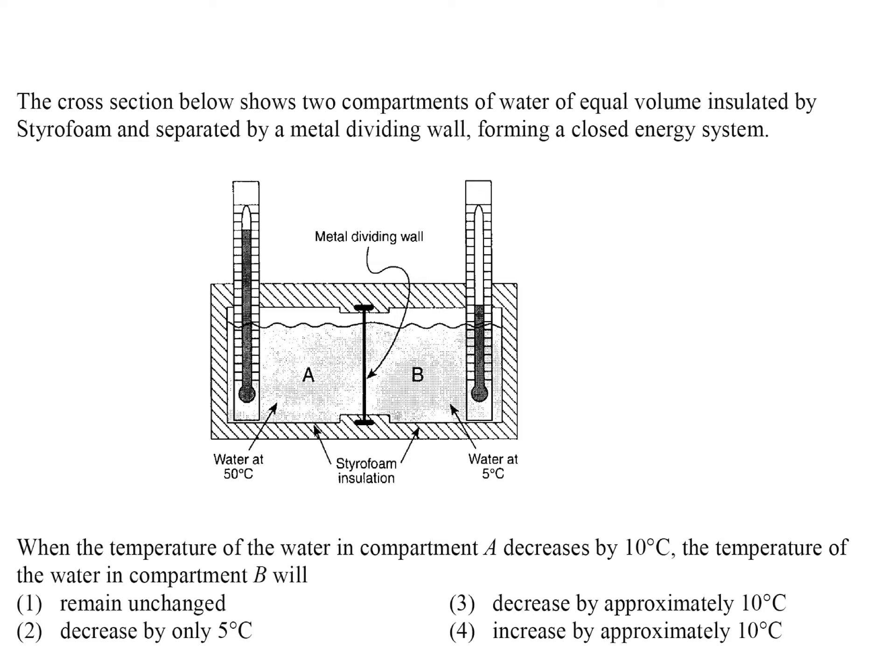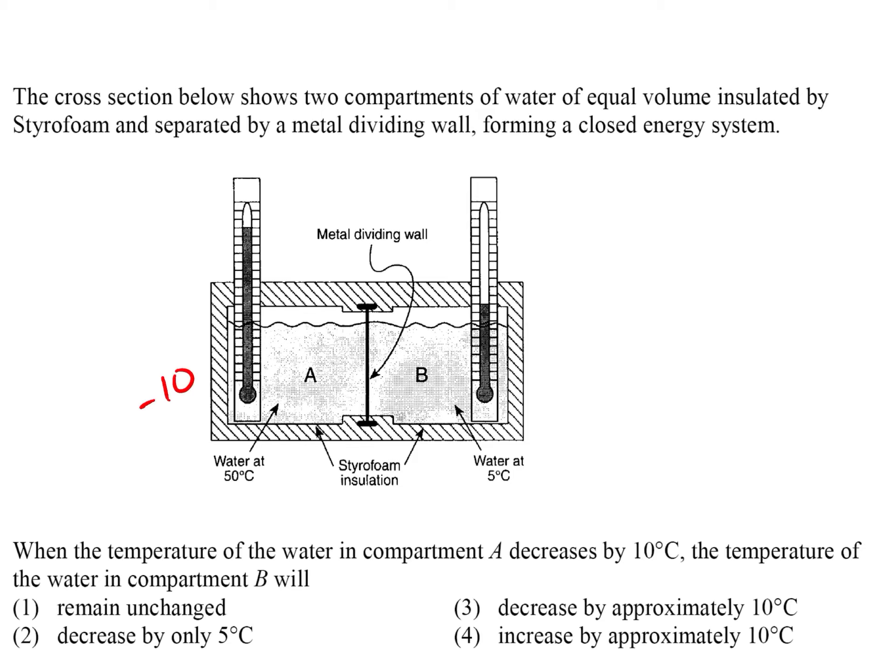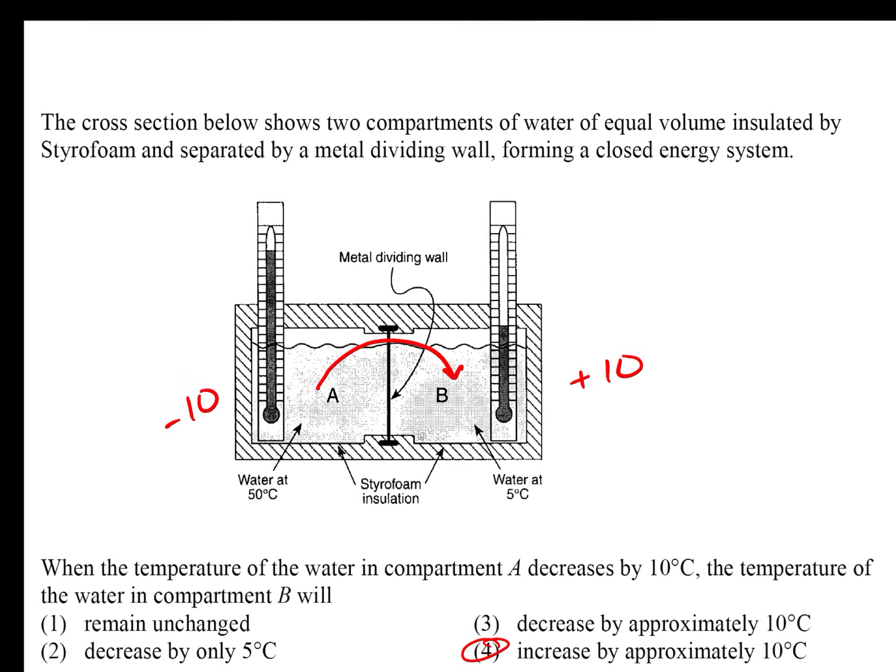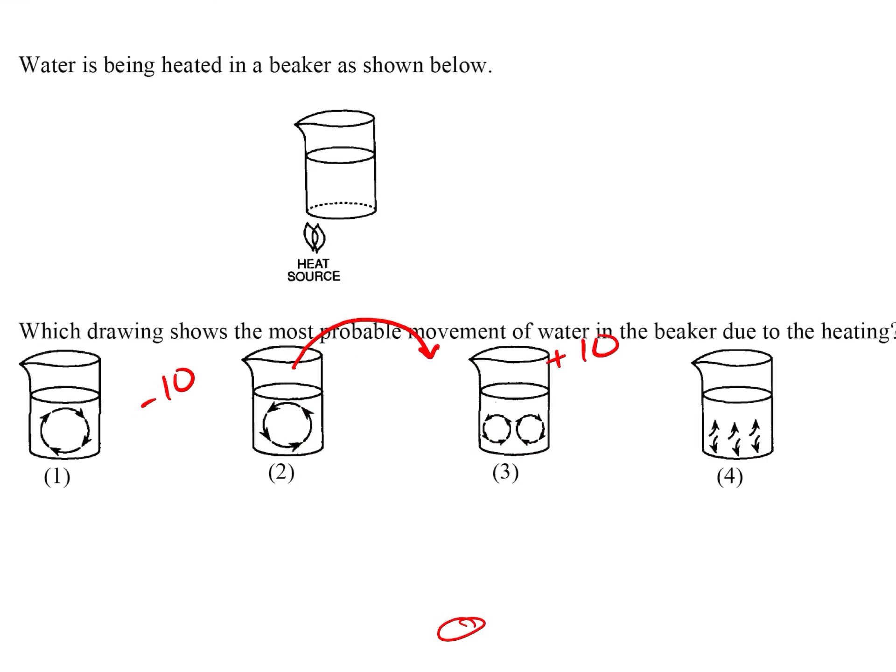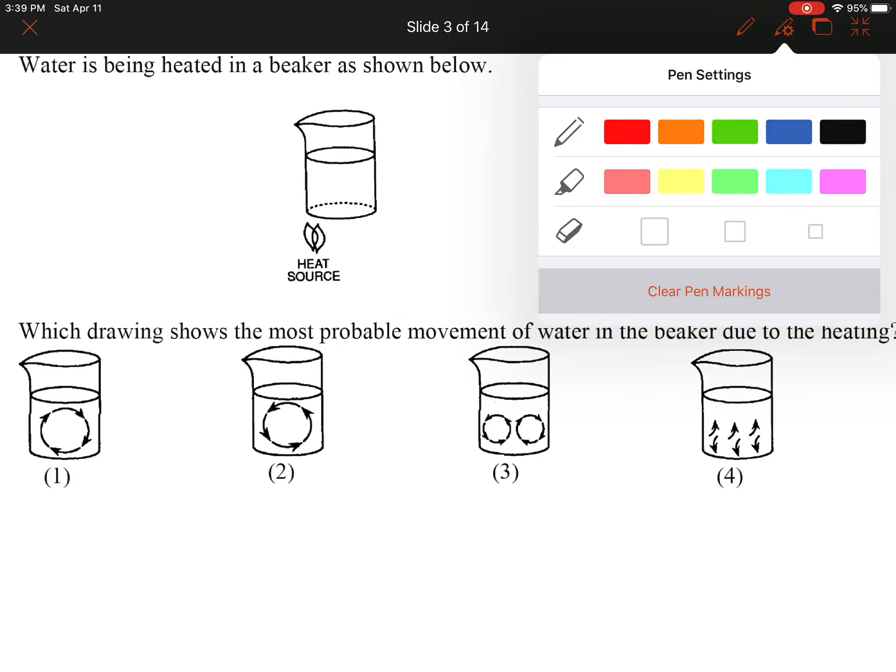A couple practice questions from last time. When the temperature of the water in compartment A goes down by 10 degrees, what's going to happen on the other side? As we mentioned before, heat will travel from hot to cold, so this one is going to go up by 10 degrees, so your answer should be four. Next one: water is being heated in the beaker. Which one of these drawings is going to show the movement of the water? This is convection because it's a liquid and it is heating up and cooling down. We spoke about this discussing convection currents in the asthenosphere, so it's going to heat up over the heat source and then cool down on the other side, so it should look like choice one.